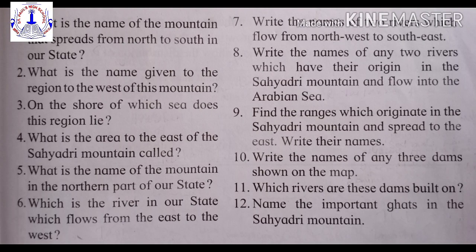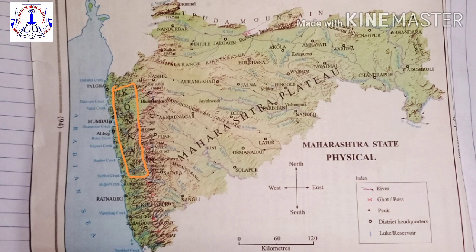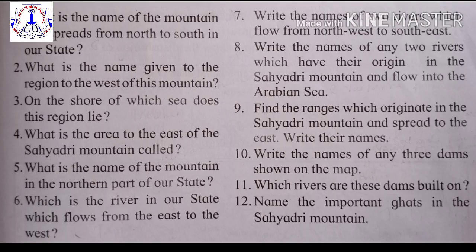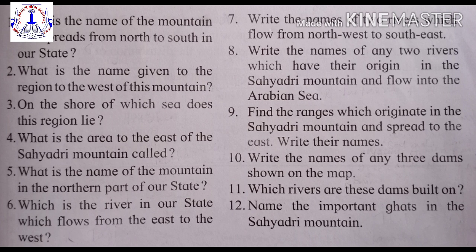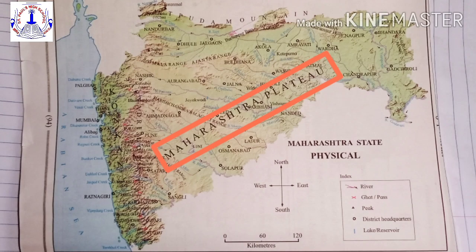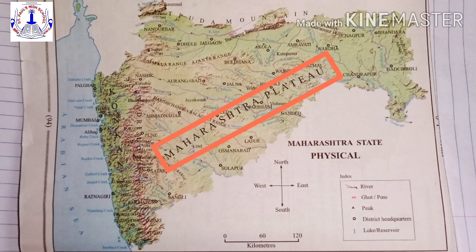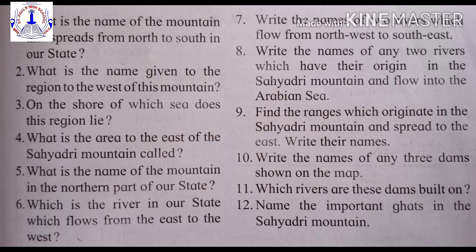Second question: what is the name given to the region to the west of the Sahyadri Mountain? The answer is the Konkan region. Third question: on the shore of which sea does the Konkan region lie? The Konkan region lies on the shore of the Arabian Sea. Fourth question: what is the area to the east of the Sahyadri Mountain called? It is called the Maharashtra Plateau. Fifth question: what is the name of the mountain in the northern part of our state? The answer is the Satpura Mountain.